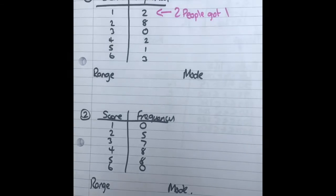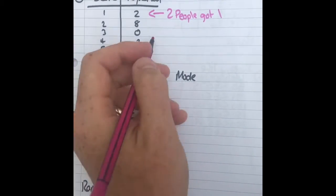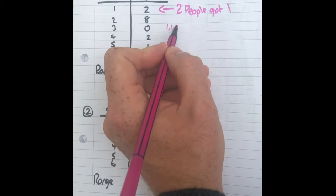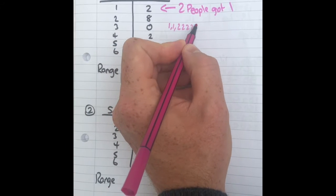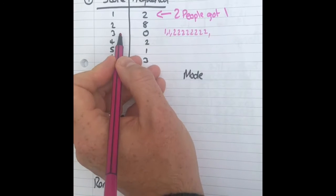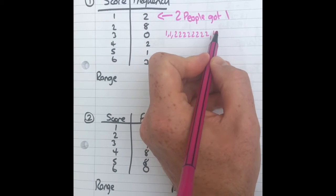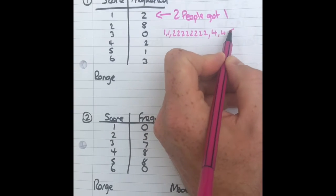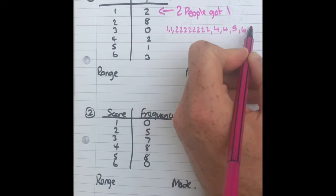We can, if we wanted to, write this out in a big list. So we could say there were two ones, there were eight twos, then there were no threes, there were two fours, there was one five, and there was three sixes.